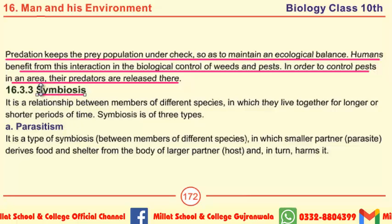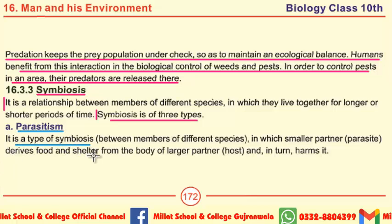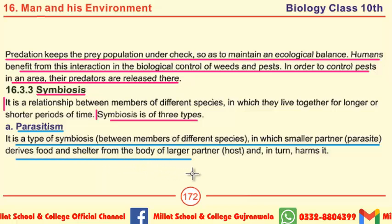The next topic is symbiosis — also an important interaction. Symbiosis is of three types. The first type is parasitism. Parasitism is a type of symbiosis between members of different species in which the smaller partner, the parasite, derives food and shelter from the body of the larger partner, the host, and in turn harms it. The definitions of symbiosis and parasitism may be considered important MCQs.